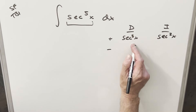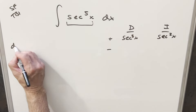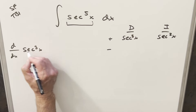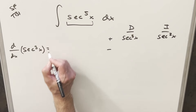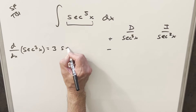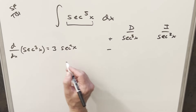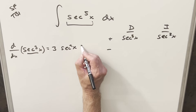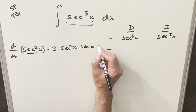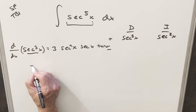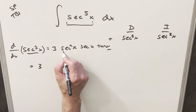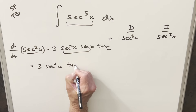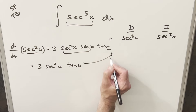First, let's find the derivative of secant cubed x. There's some chain rule involved: applying the power rule gives 3 sec²x, and then chain rule on secant gives another secant x times tan x. Putting that all together, the derivative of sec³x is 3 sec³x tan x. Let's put that back into our table.